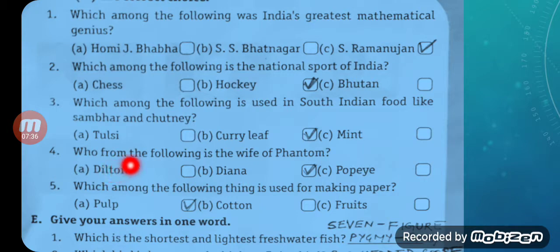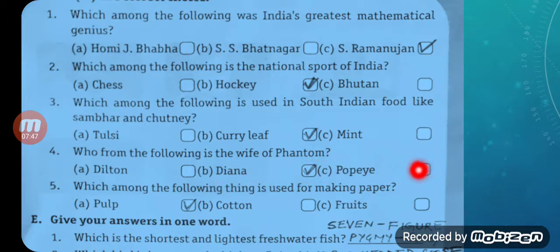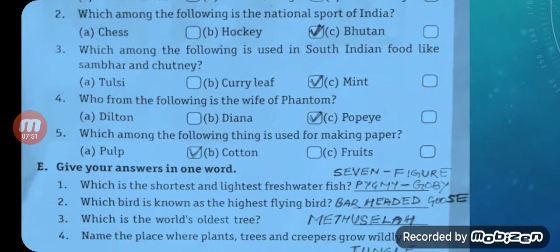Question number four: Who from the following is the wife of Phantom? Phantom is a cartoon. Options: A — Dilton, B — Diana, C — Popeye. The answer is Diana — Option B is correct.